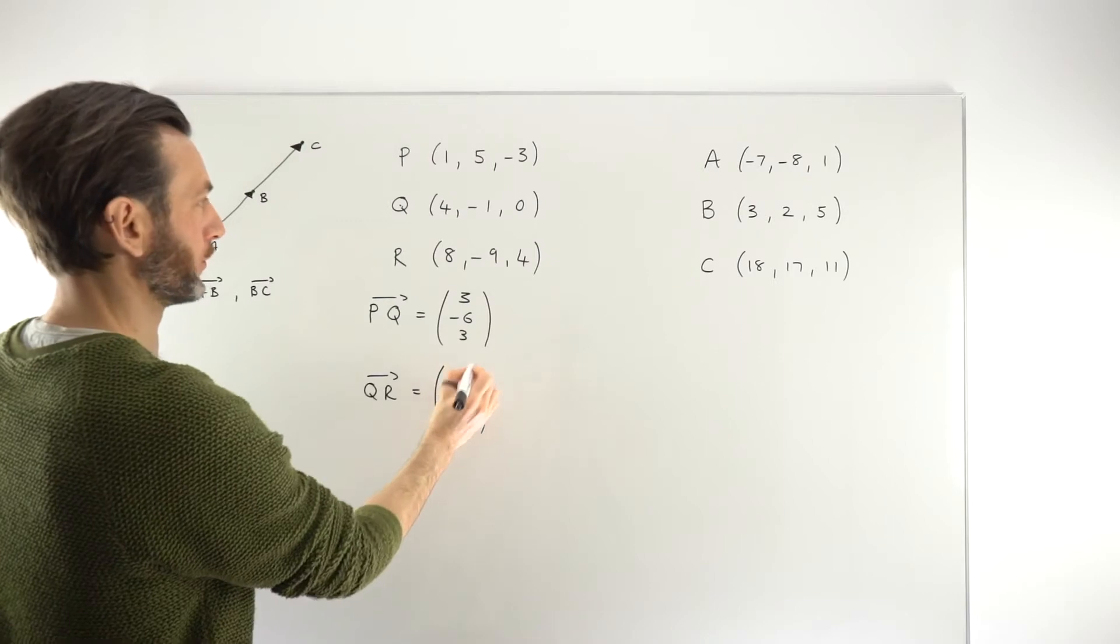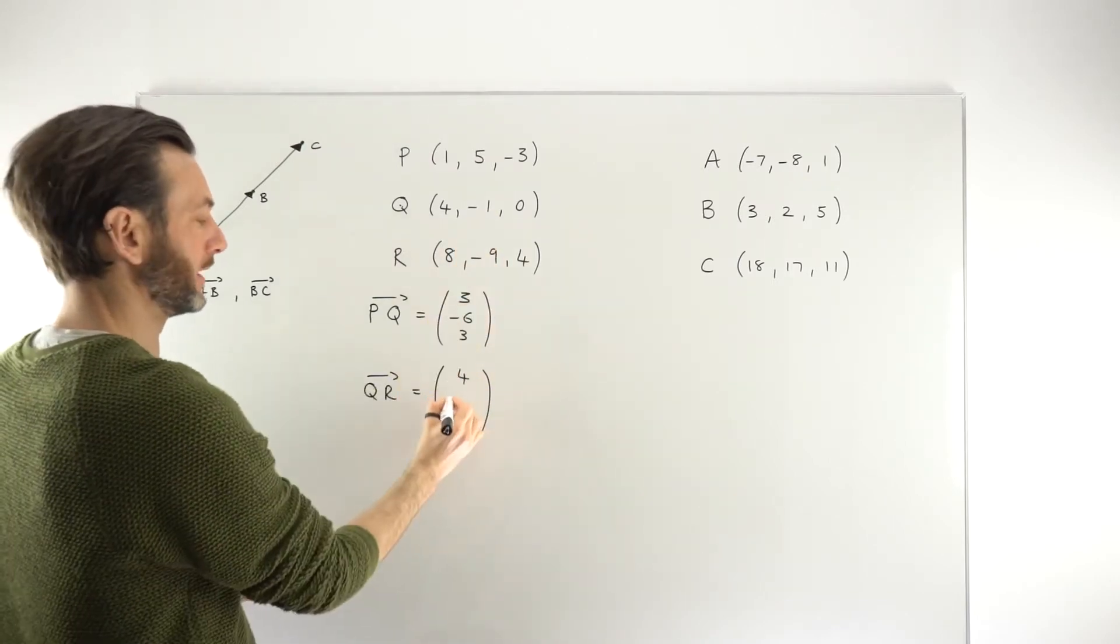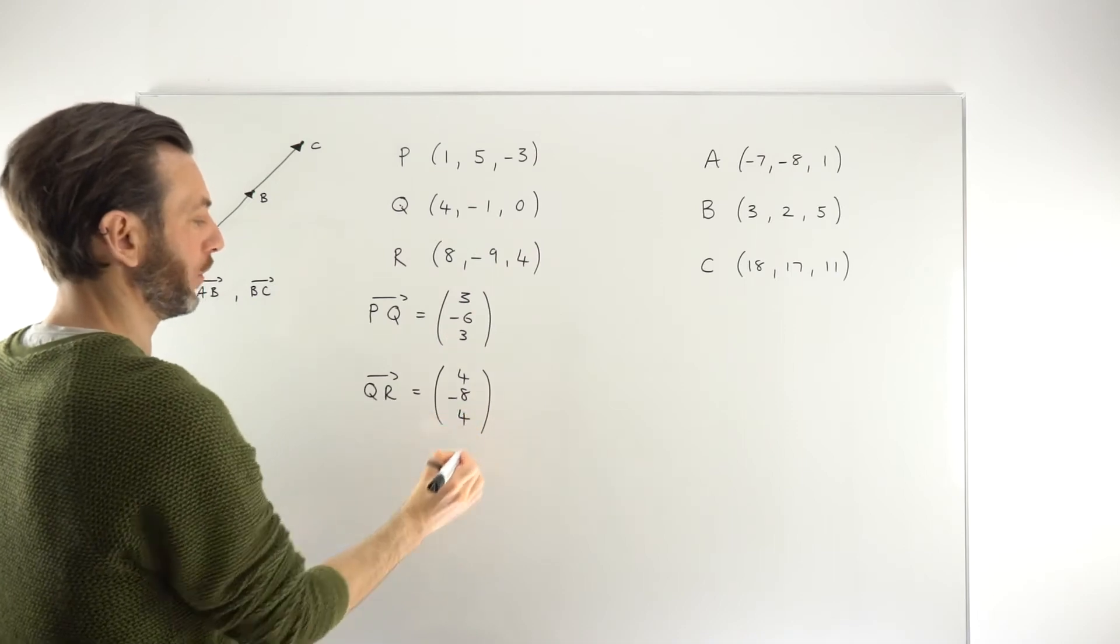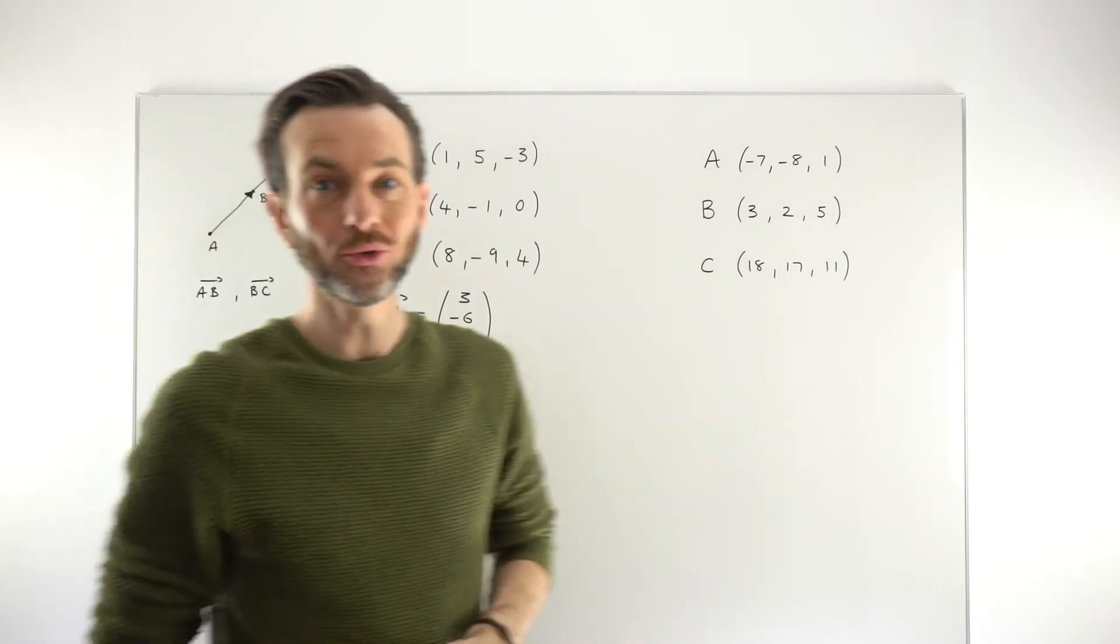So 4 to 8 is a move of positive 4. Minus 1 to minus 9 is minus 8. And then 0 to 4 is a move of 4. So we've got our two vectors.